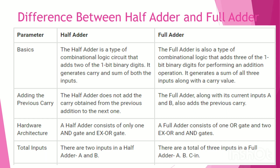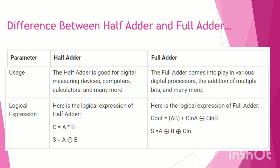Now we discuss the differences between Half-Adder and Full-Adder. A Half-Adder is a combinational logic circuit that adds two one-bit binary digits and generates a carry and sum. It uses two inputs and two outputs. A Full-Adder uses three inputs and two outputs, and it adds the carry from previous additions. Full-Adder applications include digital processors and addition of multiple bits.